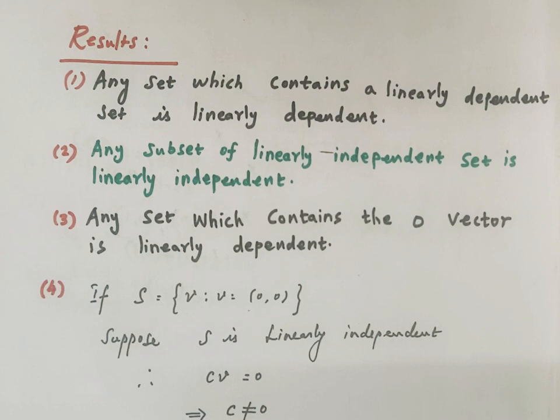Any set which contains the zero vector is linearly dependent. This is the third key result.